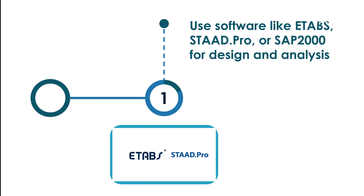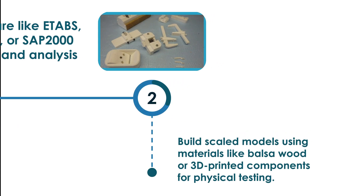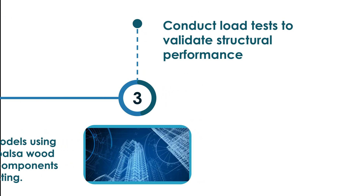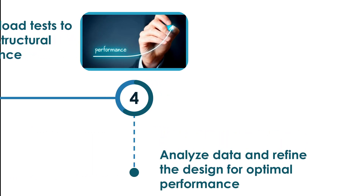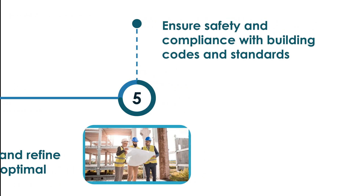For prototype development, use software like ETABS, STAAD-Pro, or SAP2000 for design and analysis. Build scaled models using materials like balsa wood or 3D-printed components for physical testing. Conduct load tests to validate structural performance, analyze data, refine the design for optimal performance, and ensure safety and compliance with building codes and standards.